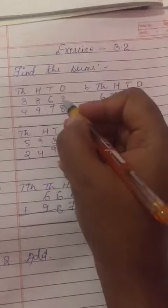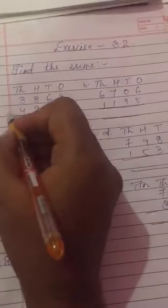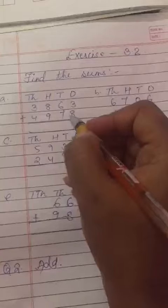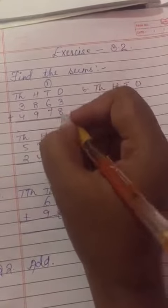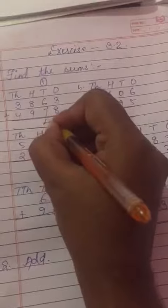Ab hai humara question 3 and 8. Abhi kya karna hai hume? Add karna hai. 3 and 8 humara kitna hoga? 11, 11 ka 1, 1 humara carry ho jayega, ok? 6 and 7, 13, 13 on 1, 14, 14 ka 4.